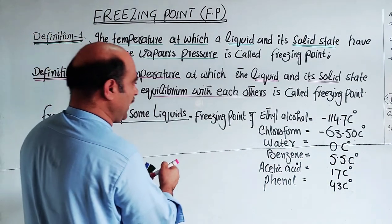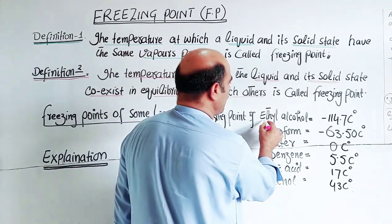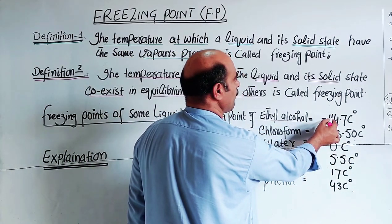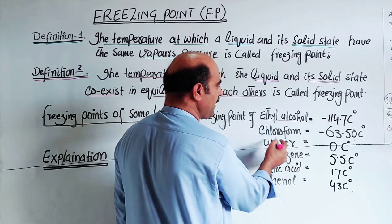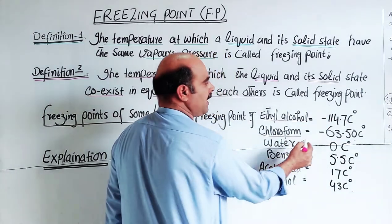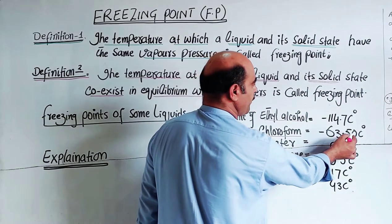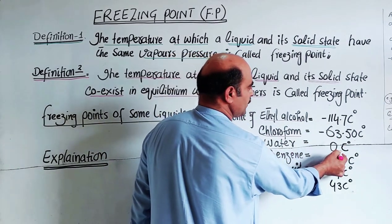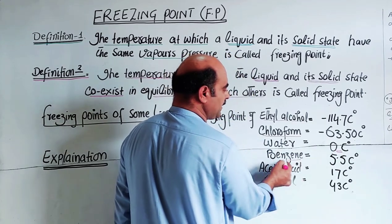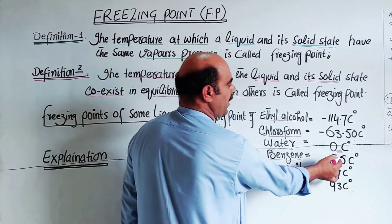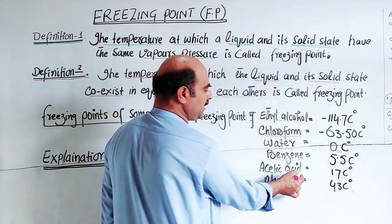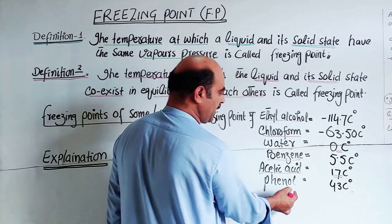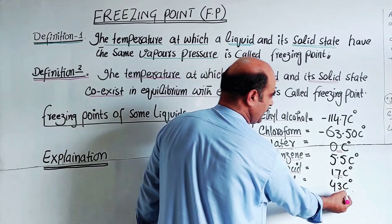Freezing points of some common liquids: The freezing point of ethyl alcohol is minus 114.7 degrees C. The freezing point of chloroform is minus 63.50 degrees C. The freezing point of water is 0 degrees C. The freezing point of benzene is 5.5 degrees C. The freezing point of acetic acid is 17 degrees C. And the freezing point of phenol is 43 degrees C.